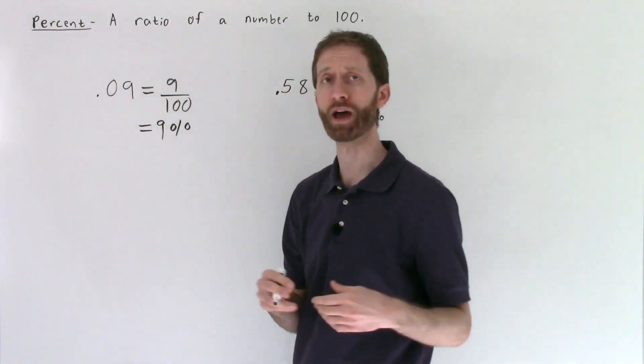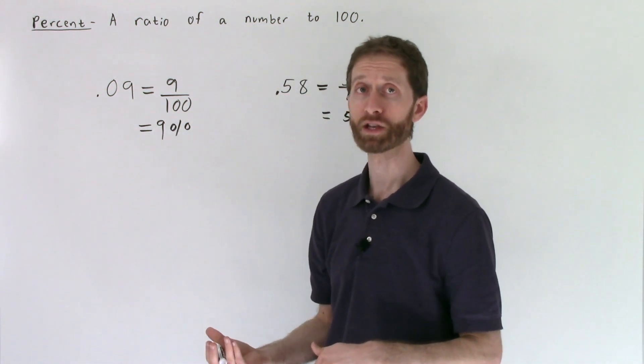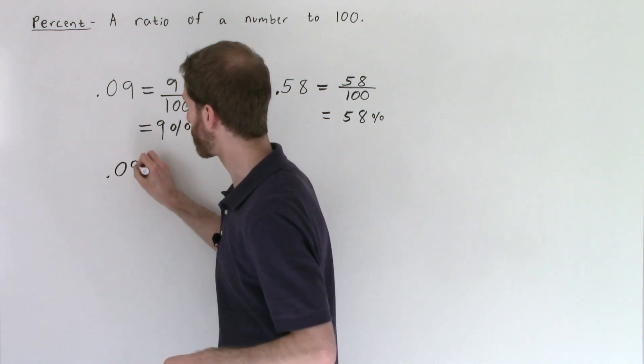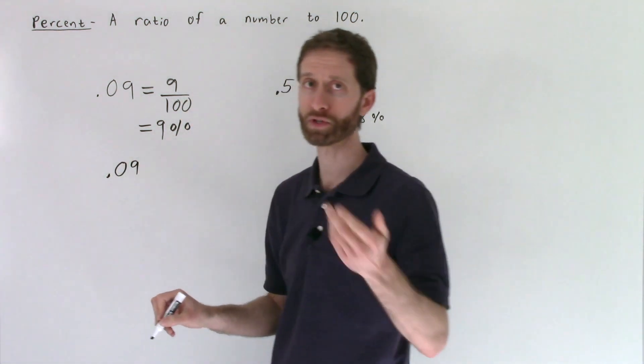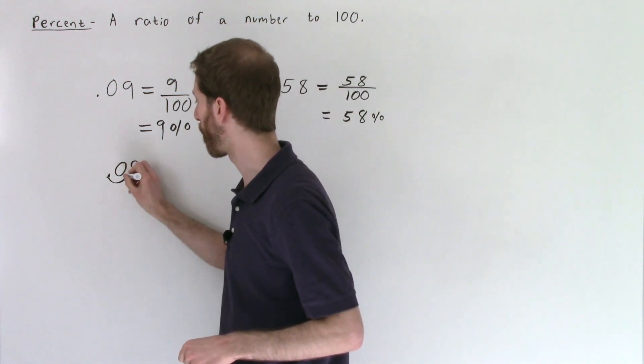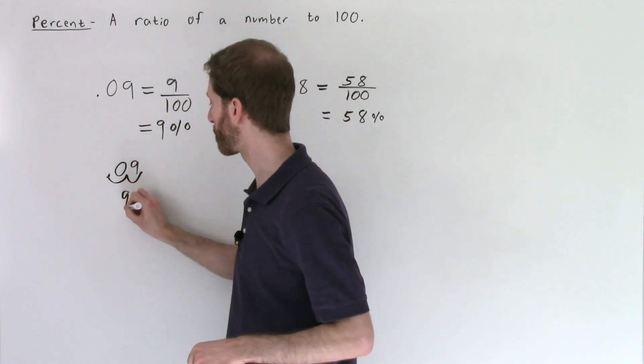Another way of converting from point zero nine to the percentage is the trick of moving the decimal point over. When you're converting a decimal to a percent, we move the decimal place two places to the right. So we would go one, two, and you'd end up with nine percent.